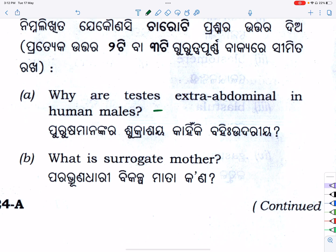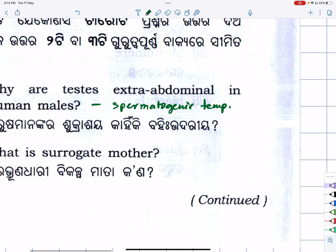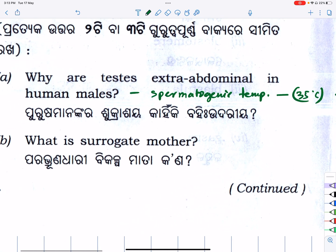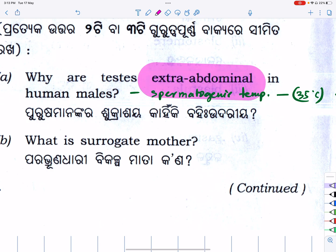Short notes about the testes — extra-abdominal location in human males. You know temperature occurs for sperm production. The spermatogenic temperature — the body temperature is very high at 37°C, but sperm production requires 35°C.